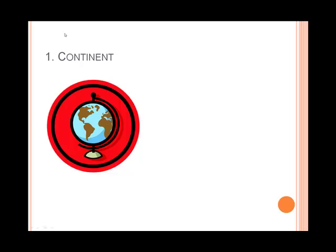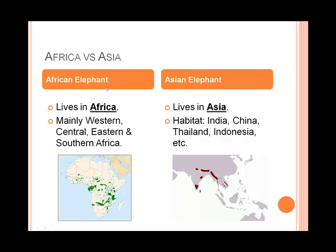The first major difference is the continent on which they live. The African elephant lives in Africa whereas the Asian elephant lives in Asia.